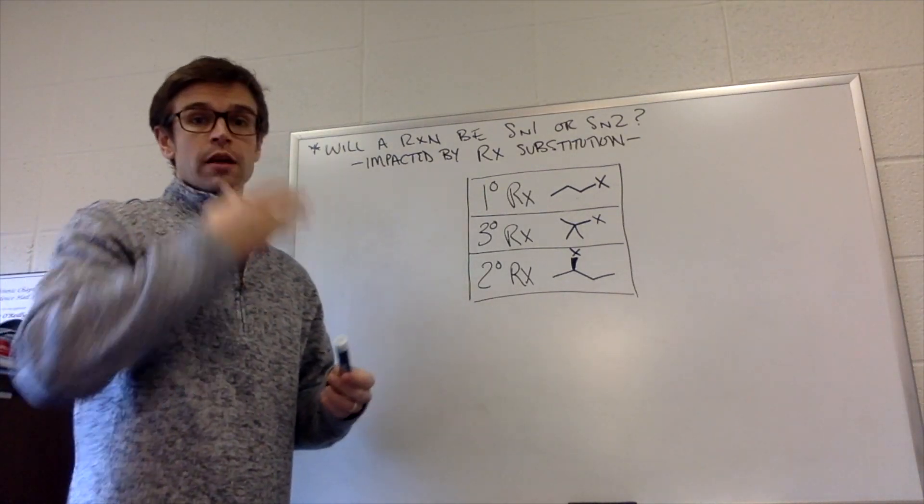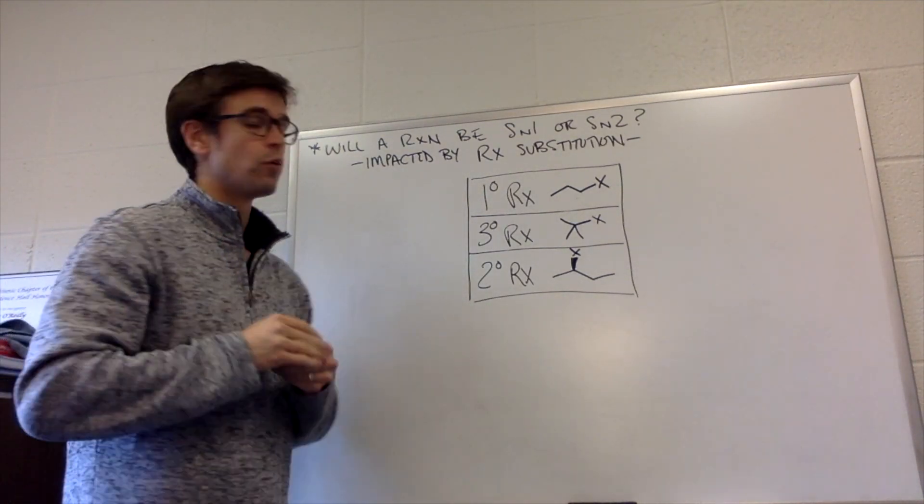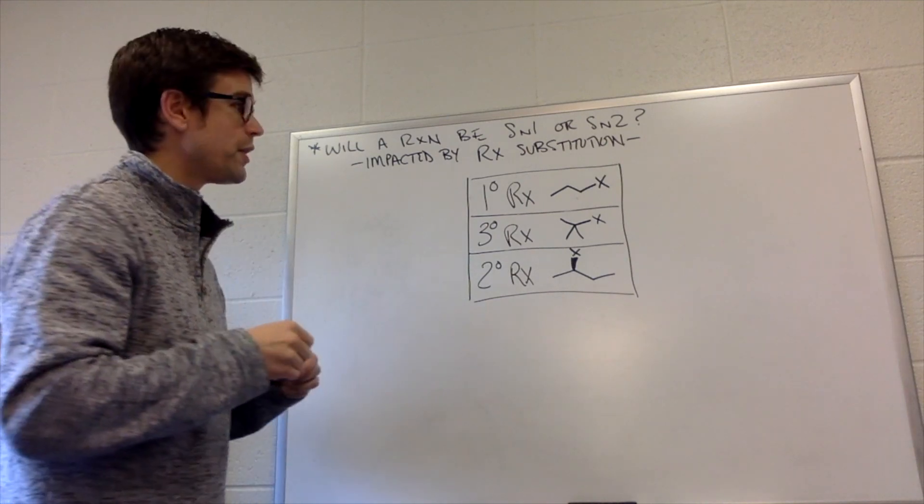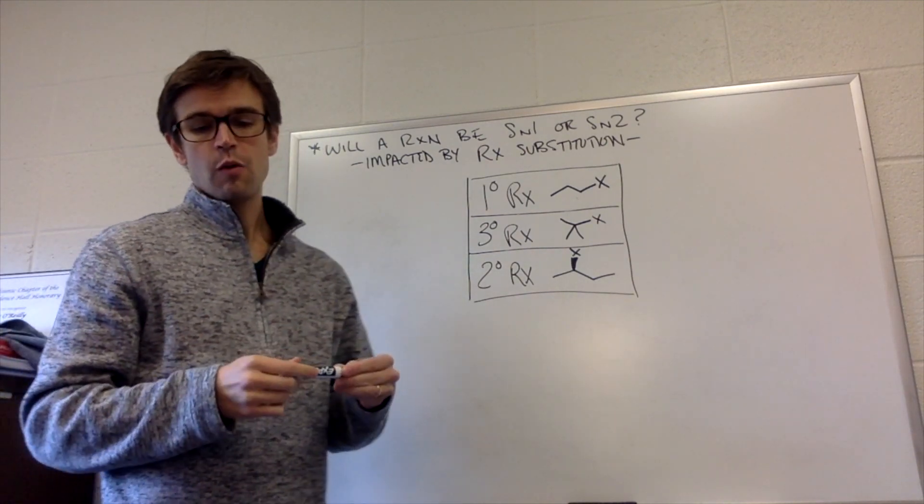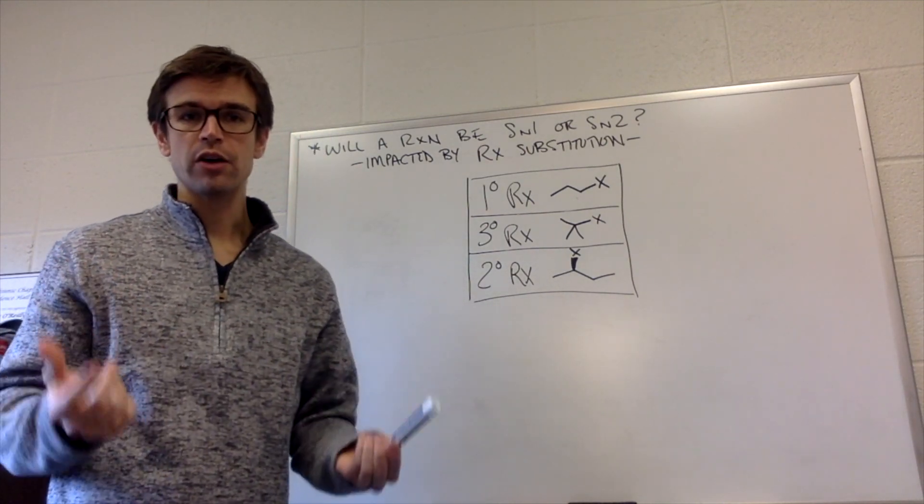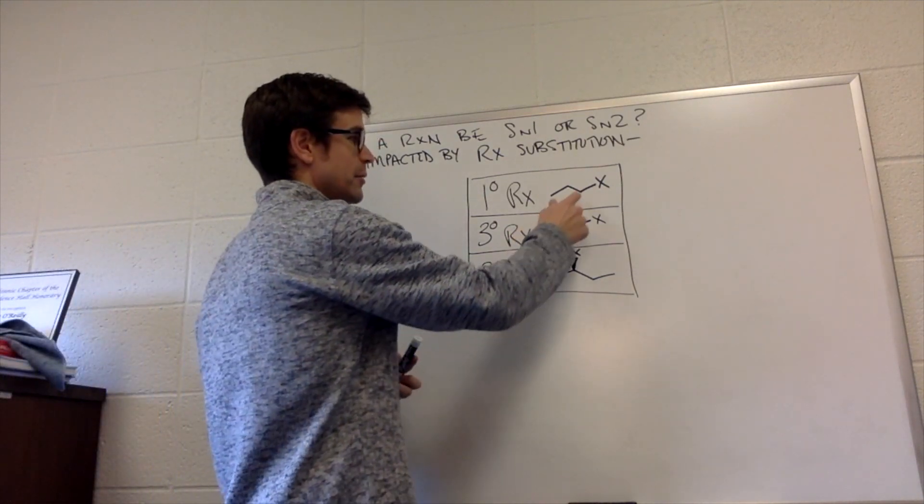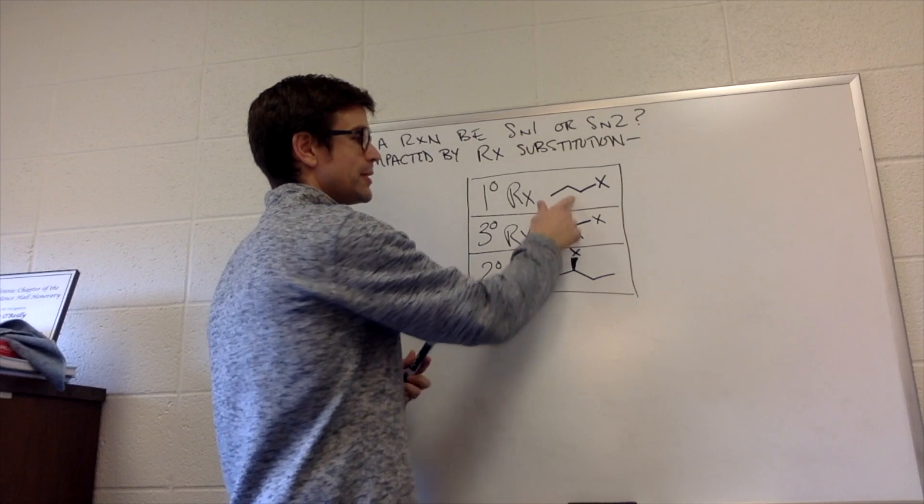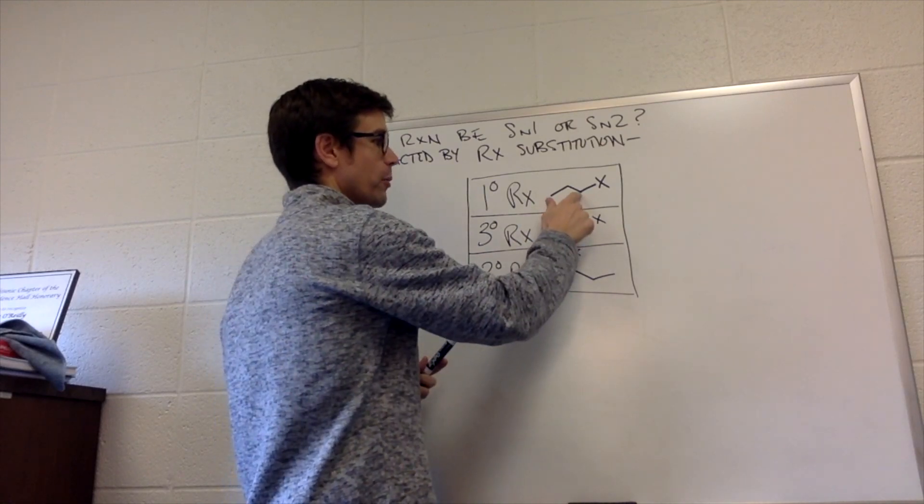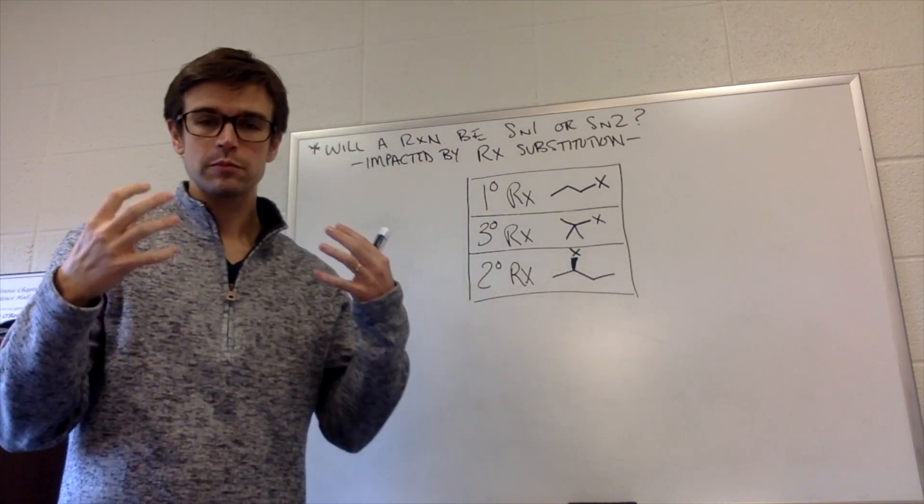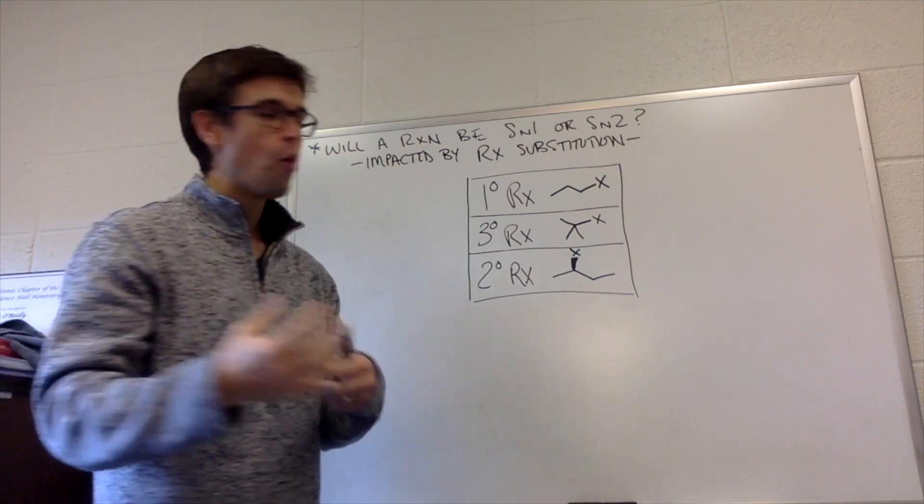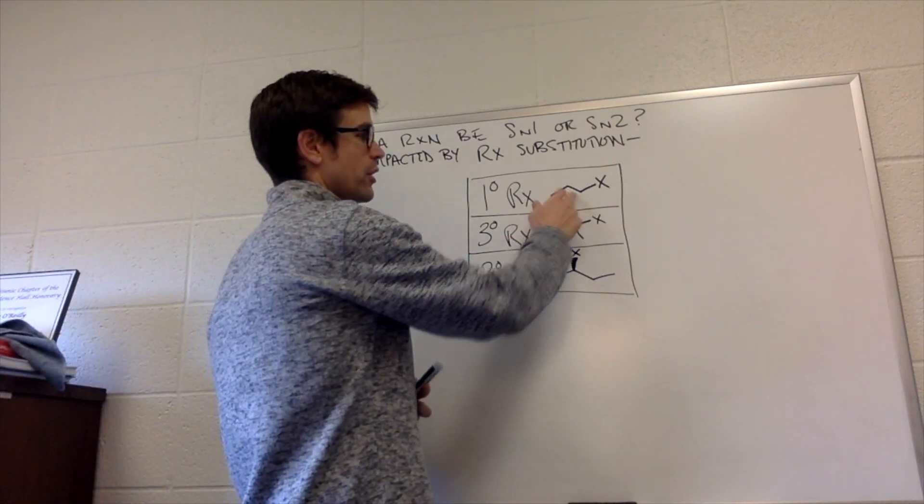So SN1 versus SN2, what have we learned so far? So one thing we learned is that when we have a primary alkyl halide, the anti-bonding orbital, the sigma star, which is on the opposite side of the bonding orbital, is relatively open when you have a primary alkyl halide.